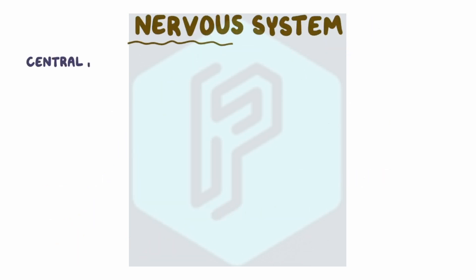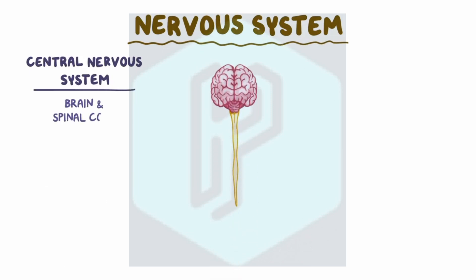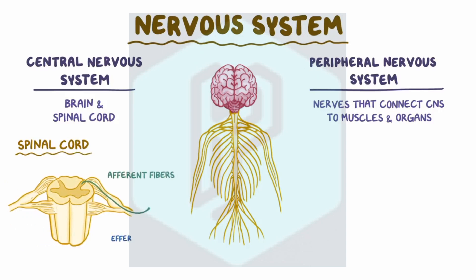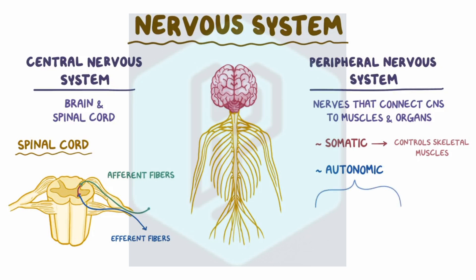As a quick recap, the nervous system includes the central nervous system — the brain and spinal cord — and the peripheral nervous system, which includes all the nerves connecting the central nervous system to the muscles and organs. The spinal cord is the pathway through which afferent and efferent fibers travel to connect the brain and peripheral nervous system. The peripheral nervous system is divided into the somatic nervous system, which controls skeletal muscles, and the autonomic nervous system, further divided into the sympathetic and parasympathetic systems, which control smooth muscles and glands.